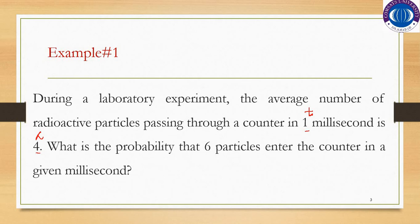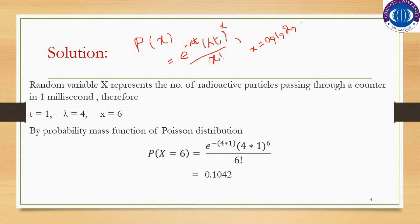Here we can use the probability mass function of Poisson distribution, as we have discussed in the previous part. The probability mass function of Poisson distribution is f(x) equals e raised to the power minus lambda times t, times lambda times t raised to the power x, divided by x factorial, where x equals zero, one, two, and so on.